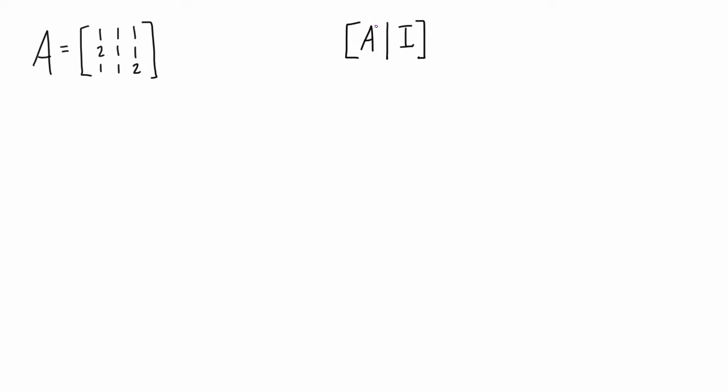And what we do is we apply elementary row operations and if we're able to successfully reduce A to the identity matrix then what we originally had on the right hand side as the identity matrix will transform into A's inverse.